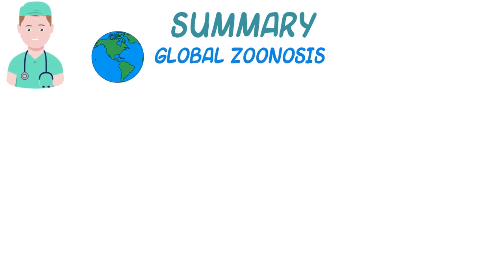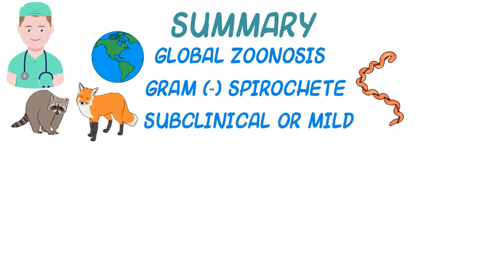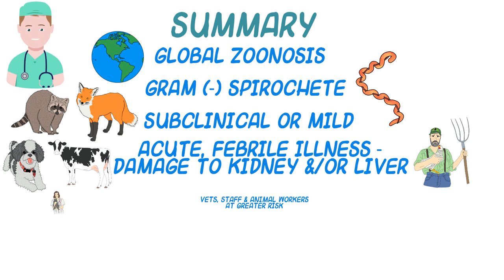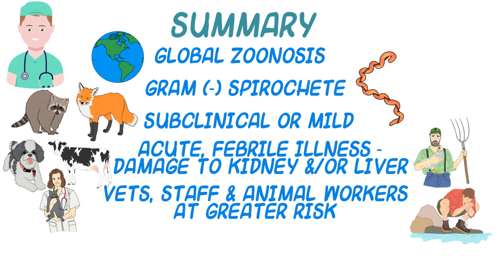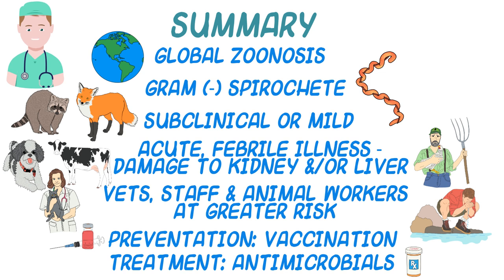In summary, leptospirosis is a zoonotic disease caused by a gram-negative spirochete bacteria that induces subclinical or mild disease in maintenance hosts and can cause an acute febrile illness characterized by damage to the kidney and/or liver in incidental hosts, including most domestic animals and man. Veterinary staff and animal workers are at greater risk of contracting leptospirosis. The most common source of infection in the general public is exposure to water sources contaminated by urine of domestic or wild animals. Prevention is best accomplished through routine vaccination of domestic animals and appropriate antimicrobial treatment in the case of acute infections. Tetracyclines are recommended for eliminating the renal carrier state.